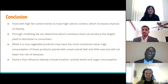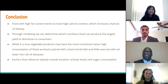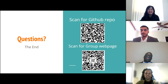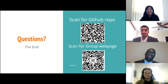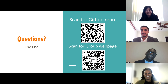In conclusion: food with high fat content tends to have high calorie content, increasing chances of obesity. We built a model that can determine which nutritious foods can be produced and distributed to consumers. While vegetable products may have the most nutritional value, high consumption paired with a bad overall diet and little exercise will not lower disease risk. Factors influencing obesity include location, activity levels, and consumption habits. We also have QR codes — one leading to our GitHub repo and one to a custom webpage with more information about each presenter, including LinkedIn profiles.